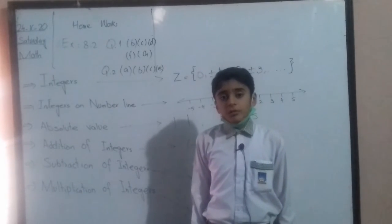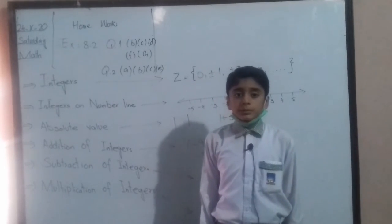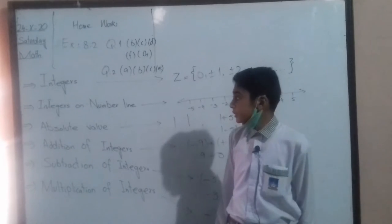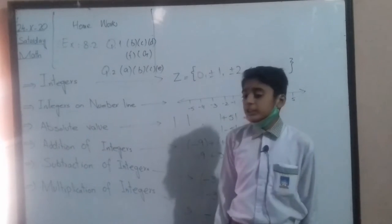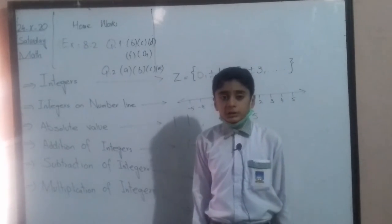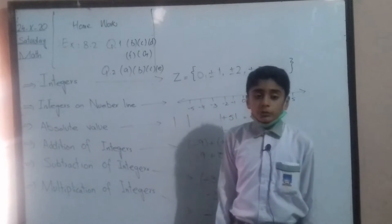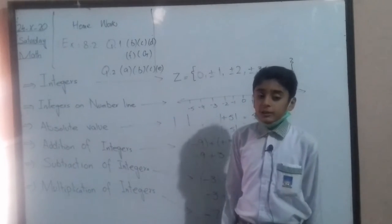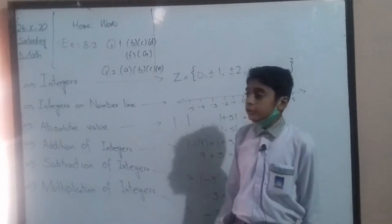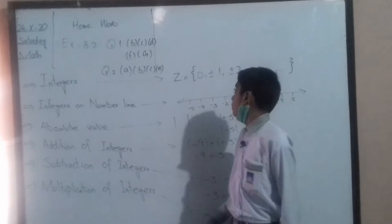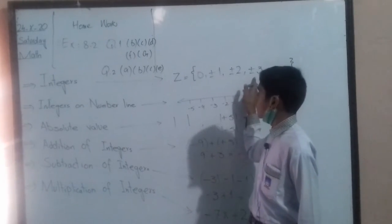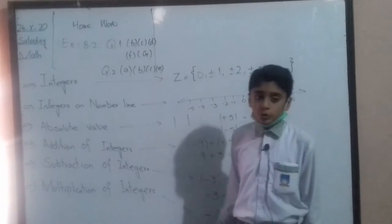An infinite series of both positive and negative numbers is called integers. It is denoted by the capital letter Z. We can write it as Z equals to 0, plus-minus 1, plus-minus 2, plus-minus 3, and so on.